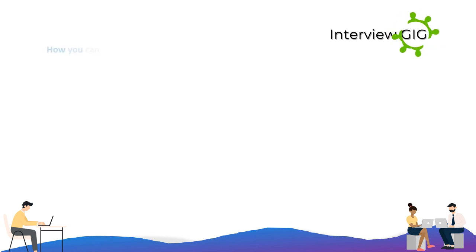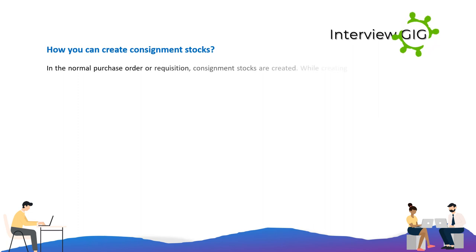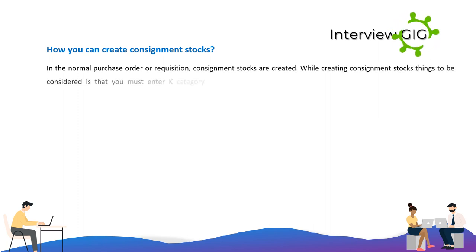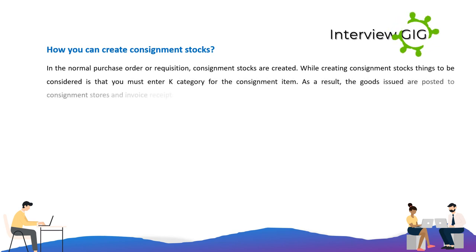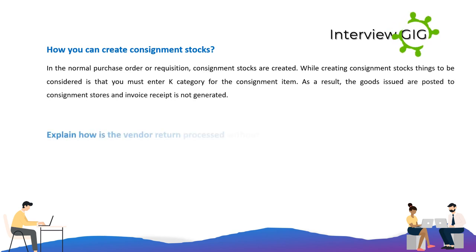How can you create consignment stocks? In the normal purchase order or requisition, consignment stocks are created. While creating consignment stocks, you must enter item category K for the consignment item. As a result, the goods issued are posted to consignment stores and invoice receipt is not generated.